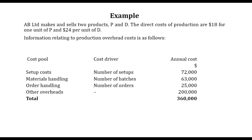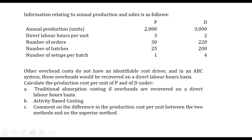This is our example: ABA Limited. Two products are being produced, P and Q. The direct costs are $18 and $24, and the full information is given. Cost pools or activities are listed alongside the cost drivers. Note that other overheads do not have a cost driver, so this must be given in other information. The total cost from here is $360,000. Further information is provided, and we are told that other overheads do not have an identifiable cost driver, but will be recovered under ABC using direct labor hours. We are asked to prepare production costs per unit using traditional absorption costing as well as the activity-based costing approach, and to comment on the difference between costs.